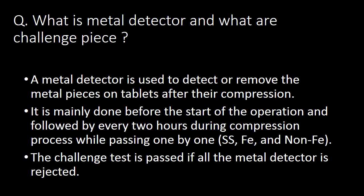Next question: what is a metal detector and what are the challenge pieces? A metal detector is used to detect or remove metal pieces on tablets after compression. It is tested before the start of compression and every two hours during the process. There are three types of challenge pieces: SS (stainless steel), ferrous, and non-ferrous. The challenge test is passed if all metal detector pieces are rejected by the metal detector.